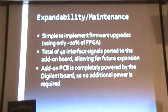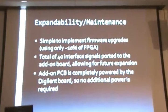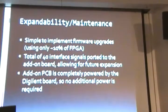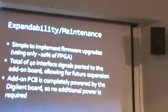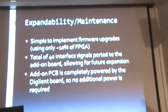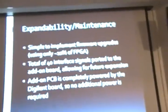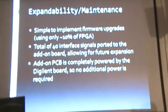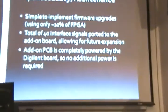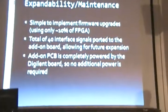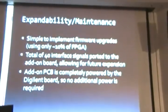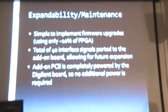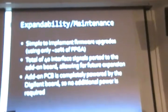Expandability is a major design consideration. We don't want people to buy this and six months or a year down the road have it be out of date and need to buy the newest thing. Some things that help with that are simple firmware upgrades. On the digital board using the Spartan 3D FPGA, the modified USRP firmware is using only approximately ten percent of the FPGA, so we can very easily add a lot of functionality into that FPGA.